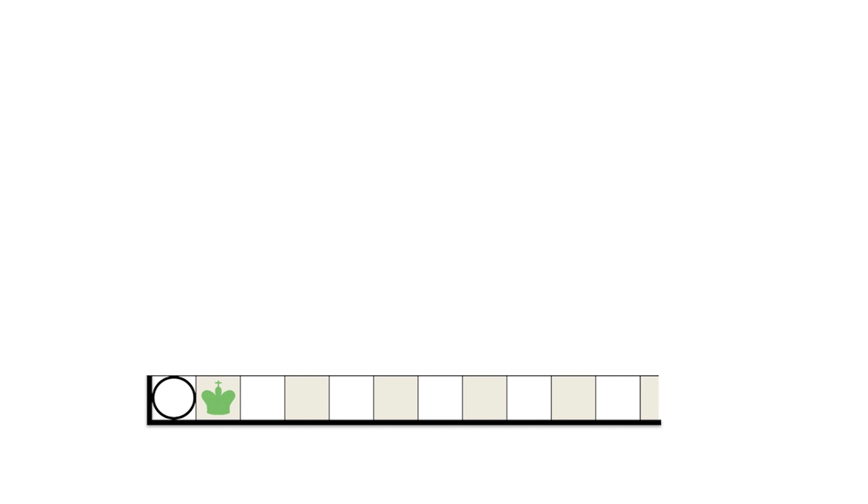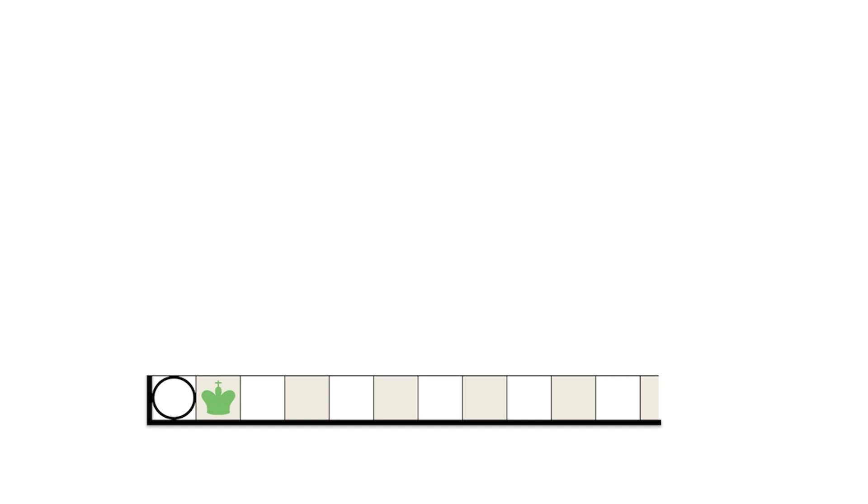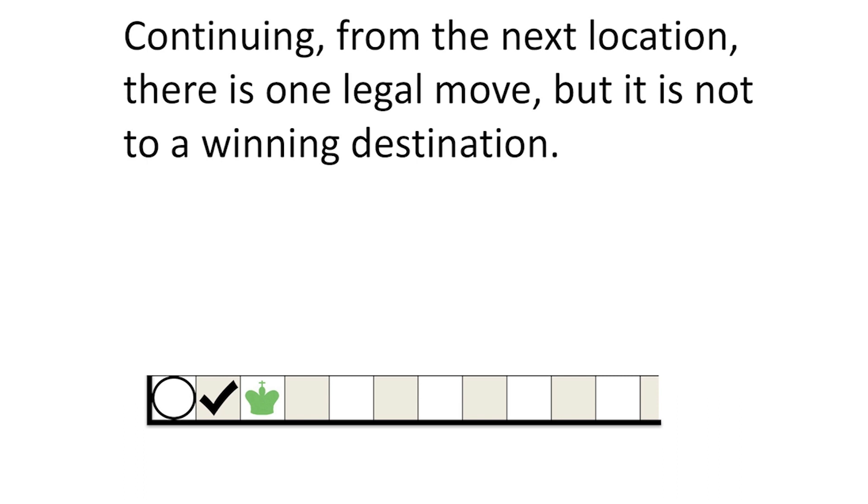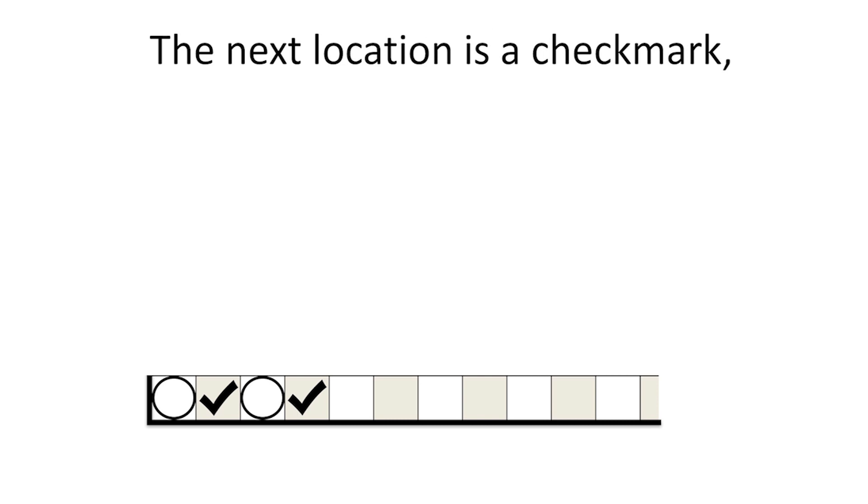We'll label such locations with a circle. What about the next square? From here, the next player can win by moving onto the circle. We'll put a check mark on such a location. Continuing from the next location, there is a legal move, but it is not to a winning destination. Since there is no winning move, this location is a circle. The next location is a check mark, and so forth.